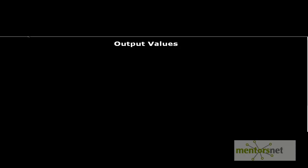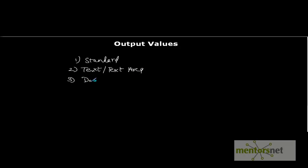There are four types of output values in QTP. The first is the standard output value, the second is text or text area, the third is database output value, and the fourth is XML output value. These are the four types of output values supported by QTP.